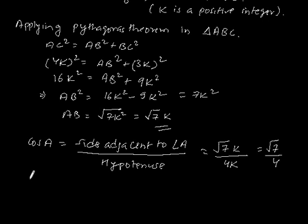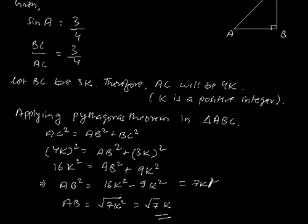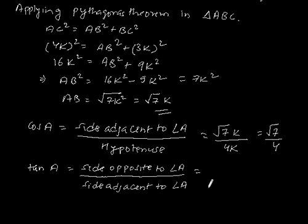Now let's find out tan A. Tan A is equal to side opposite to angle A divided by side adjacent to angle A. So opposite to angle A is BC and adjacent to angle A is AB.